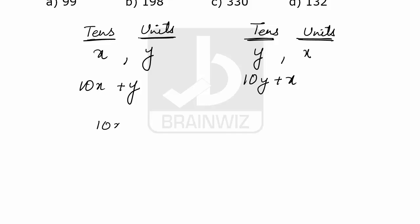Now we can say that the original number, 10x plus y, divided by 10y plus x, the ratio of these two is 4 is to 7.